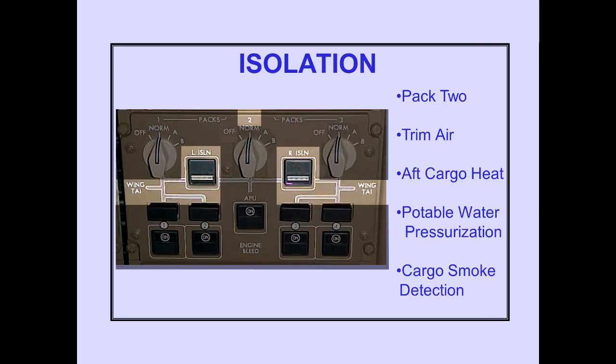With both the left and the right isolation valves closed, pack two, trim air, aft cargo heat, hydraulic reservoir, and potable water pressurization and air flow for cargo smoke detection are isolated from the engine bleed air sources. In this condition, these systems cannot operate.